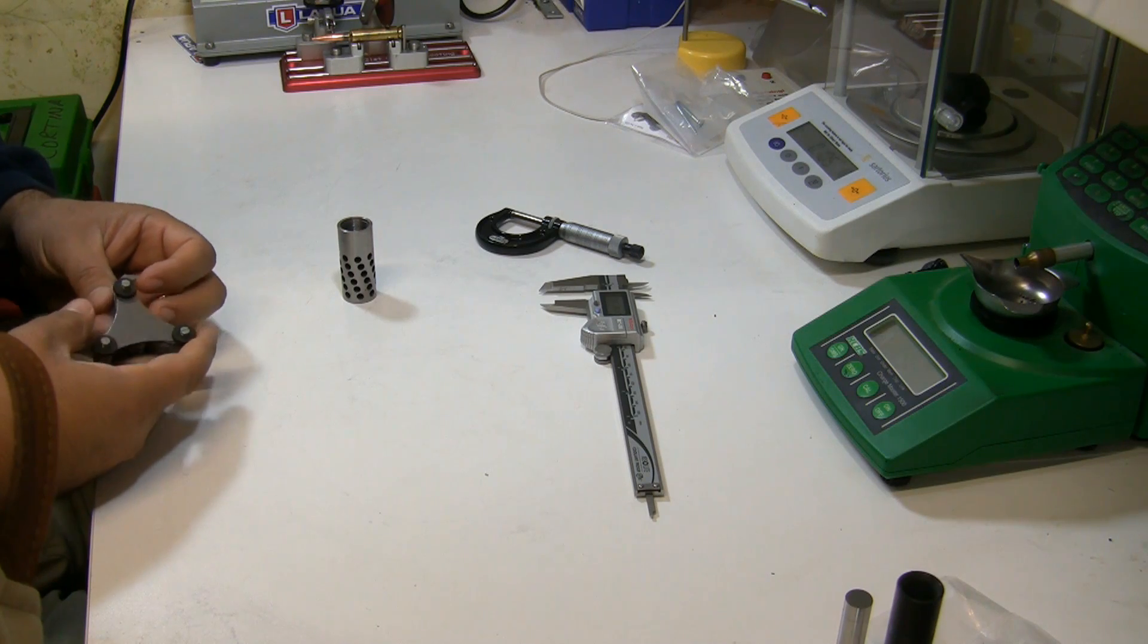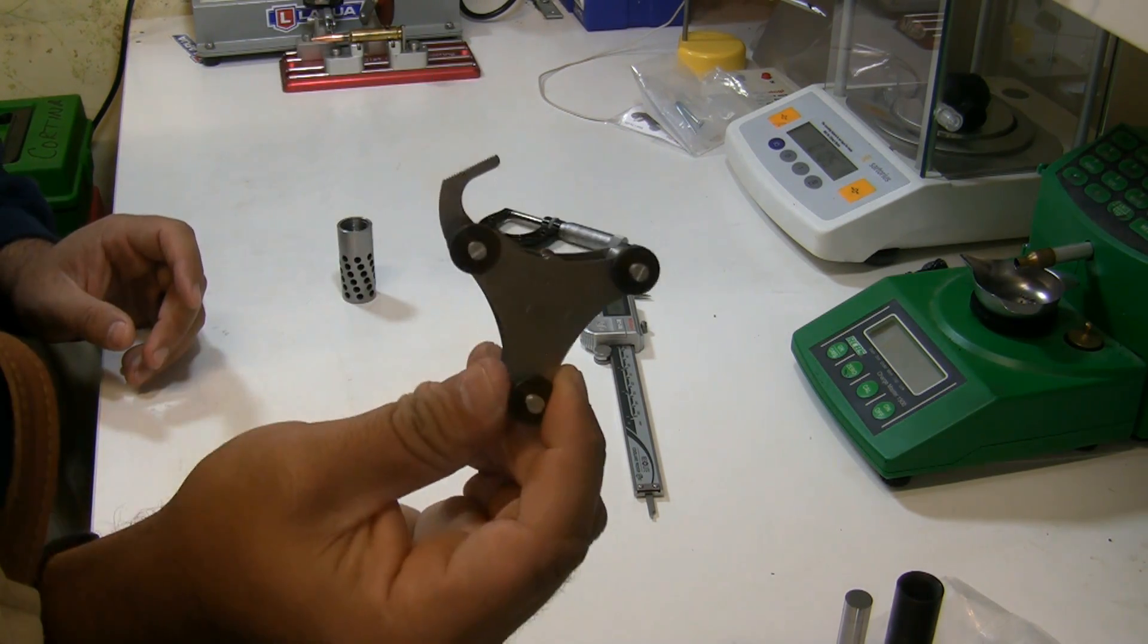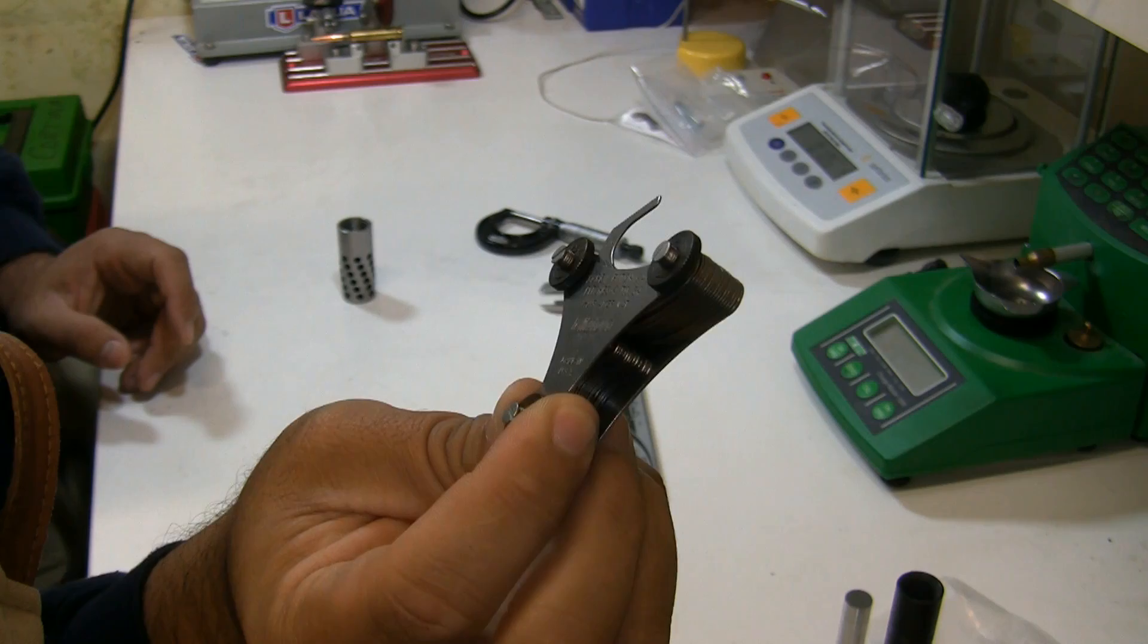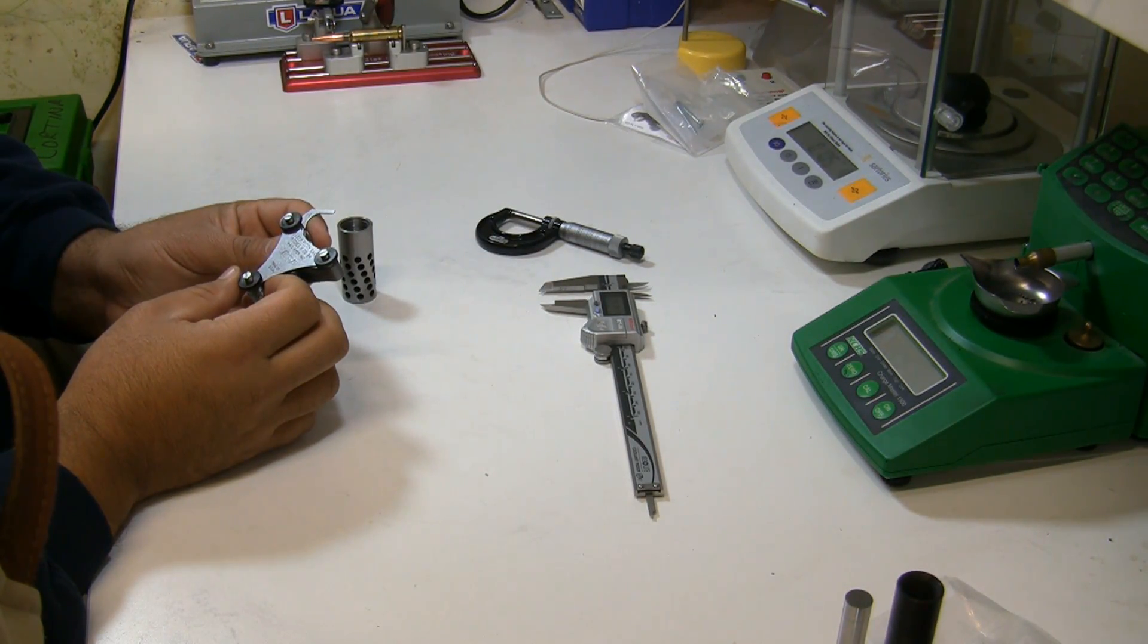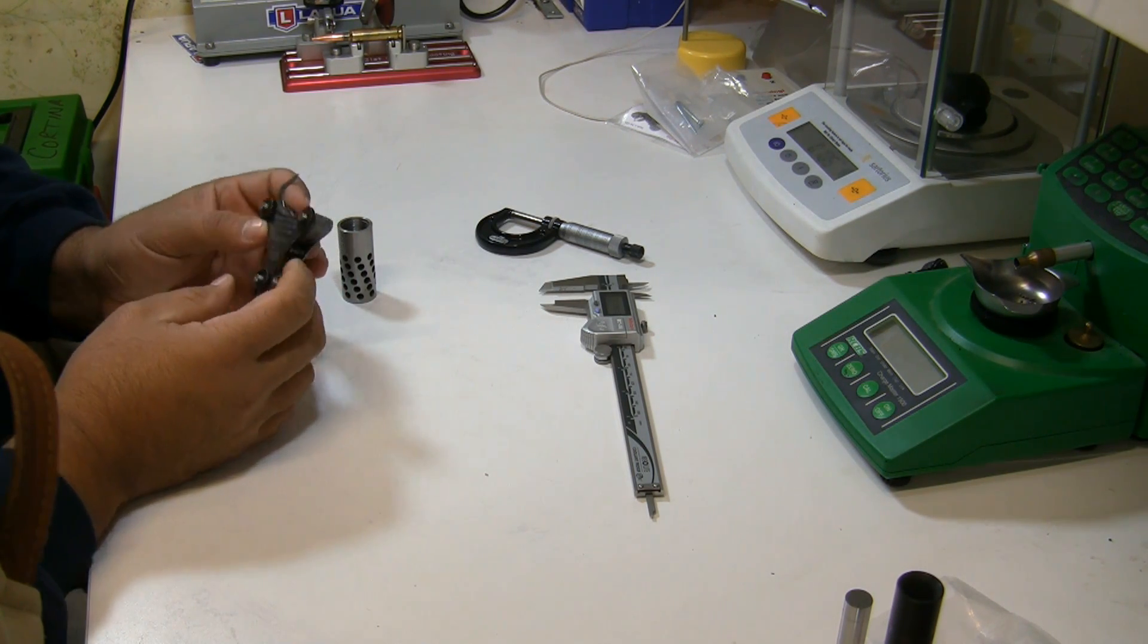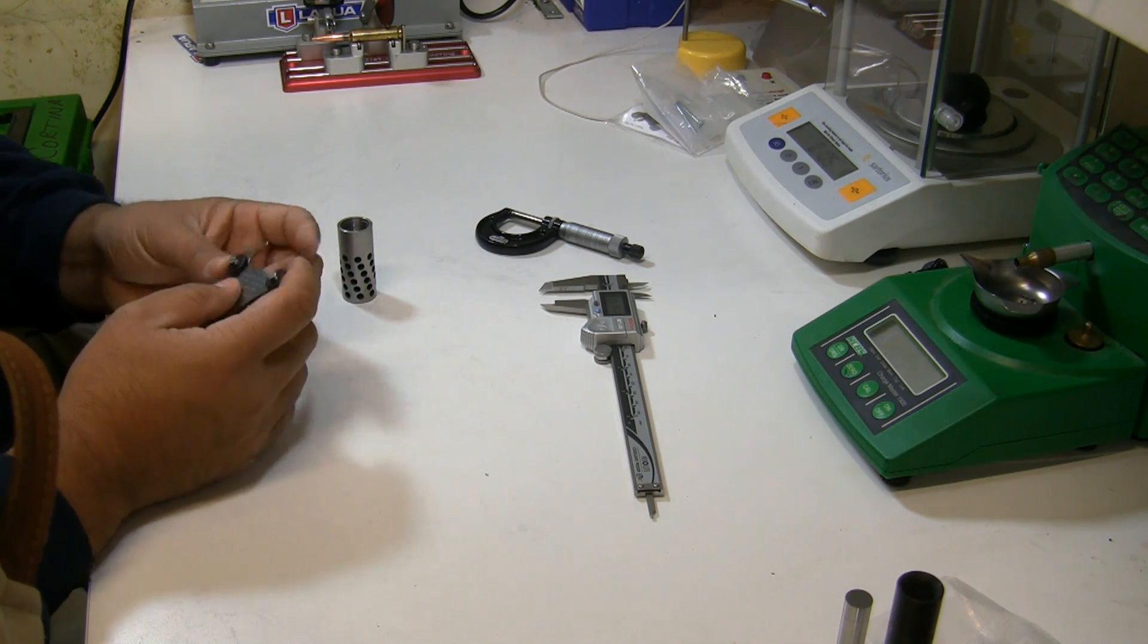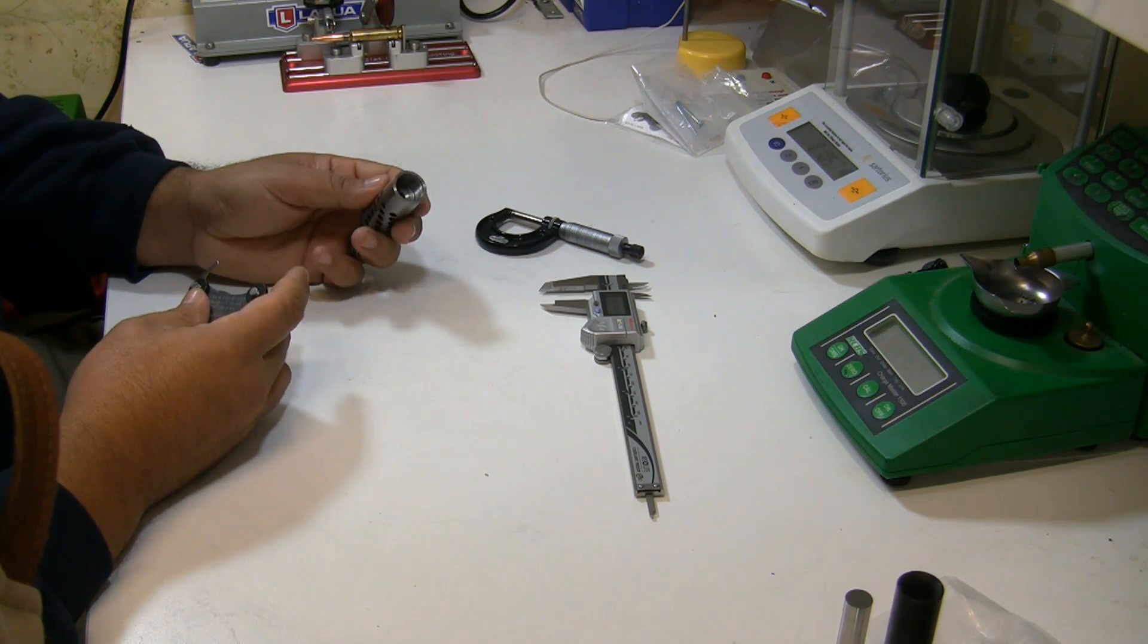I use one of these, it's a thread gauge, and this thing has anywhere from 4 to 84 pitch, so pretty much has everything I will ever need except metric, but I have another one of those. So anyway, just looking at the threads, it looks like a pretty fine thread, so I'm thinking it's gonna be 32, which is pretty common.